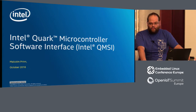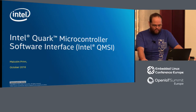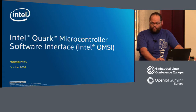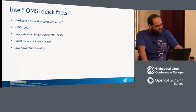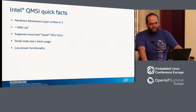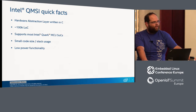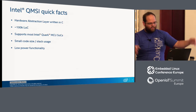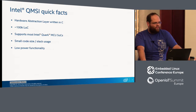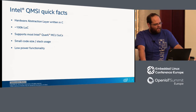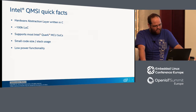I'm hoping most of you already know what QMSI is — if you don't, this might be a bit boring. So QMSI is a hardware abstraction layer written in C for Intel Quark microcontrollers. At version 1.1 there are around 100,000 lines of code. Version 1.0 had around 25,000 lines, so it's getting bigger all the time. It supports most of the Intel Quark microcontrollers, though not all of them — I'll give you a reason why later.